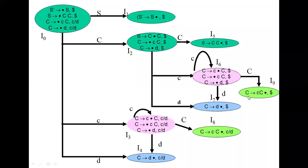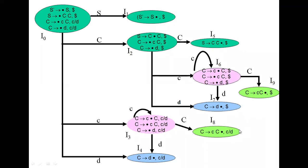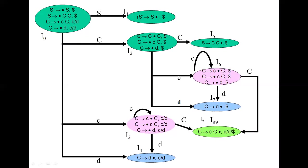Now see the core parts. In I9 and I8, these two item sets both have C produces small c capital C dot. The only difference is the lookahead: dollar versus C/D. So we can combine these two because the core parts are the same. We combine them into a new state I89. Because it was I8 and I9, we put C, D, and dollar as lookaheads. CD was for I8 and dollar was for I9. So these two have been combined into I89.